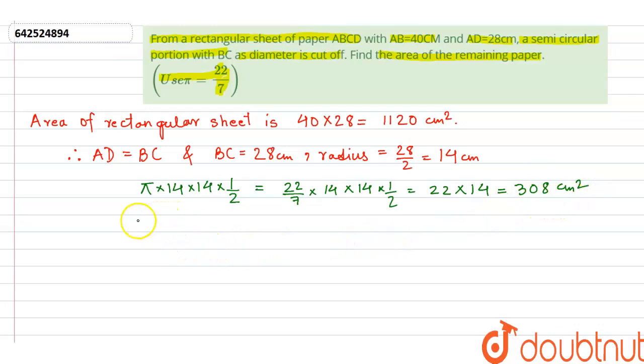So area of remaining sheet is 1120 minus 308 that is nothing but 812 cm². So that gives our final answer. Thank you.